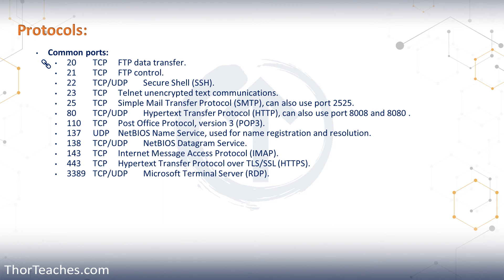Ports 137 and 138 are for NetBIOS. Port 137 is for the naming server — username registration and resolution — and uses UDP. Port 138 is where actual data is sent and can be either UDP or TCP. Finally, port 3389 is Microsoft's Terminal Server or RDP (Remote Desktop Protocol), used to connect to servers remotely, using both TCP and UDP. Since port 3389 is above 1023, it is a vendor-assigned protocol specific to Microsoft, unlike the other ports below 1024 which are non-vendor-specific.